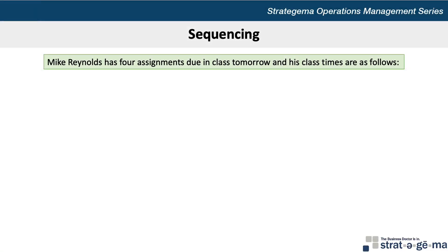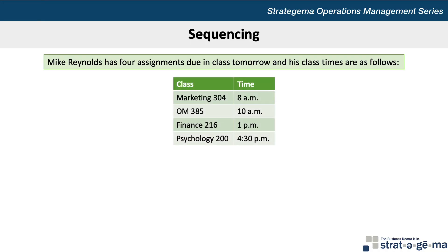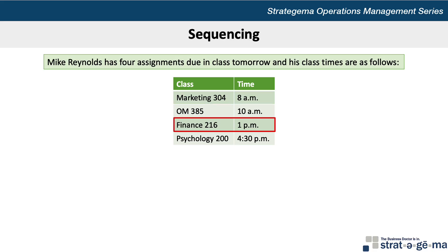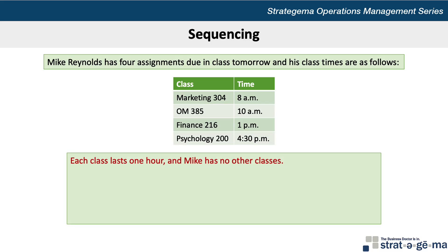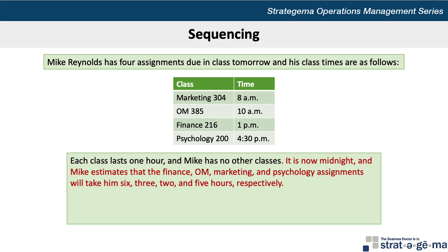Here's the data for our problem. Mike Reynolds has four assignments due in class tomorrow, and his class times are as follows. His marketing assignment is due at 8 a.m., operations management is due at 10 a.m., finance is due at 1 p.m., and psychology is due at 4:30 p.m. Each class lasts one hour and Mike has no other classes. It's now midnight, and Mike estimates that the finance, OM, marketing, and psychology assignments will take him 6, 3, 2, and 5 hours respectively.